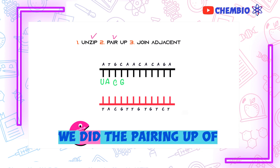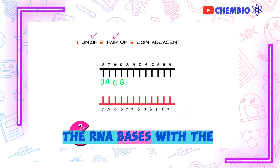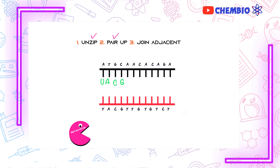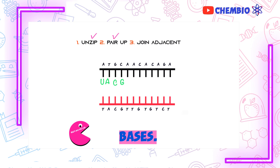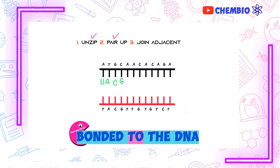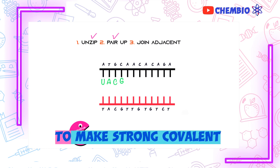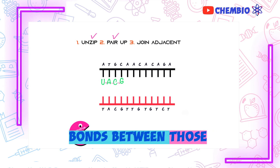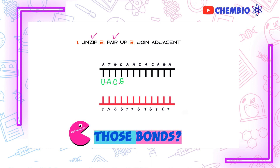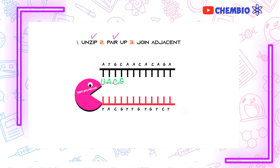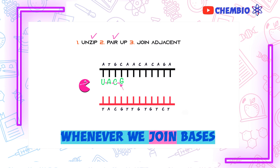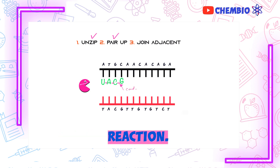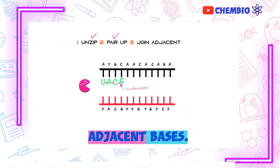So far we've unzipped the DNA and done the pairing of the RNA bases with the DNA strand. We still need one last important step: the joining of the adjacent bases. Those bases are only weakly bonded to the DNA strand, so next we're going to make strong covalent bonds between those adjacent bases. The enzyme that makes those bonds is called RNA polymerase. RNA polymerase will catalyze a chemical reaction — we call it a condensation reaction — forming strong phosphodiester bonds between those adjacent bases.